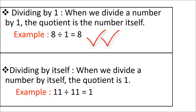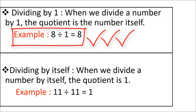First property: dividing by 1. When we divide a number by 1, the quotient is the number itself. For example, 8 divided by 1 is equal to 8. It means when you are giving 8 objects to one child, he is getting all 8 objects. So, when any number is divided by 1, we get the same number as the quotient.